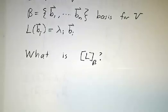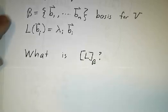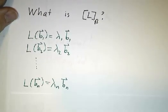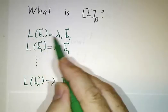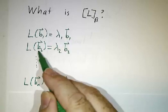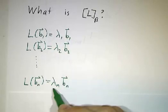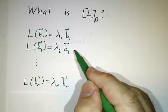Then let's try to figure out what the matrix of the linear transformation is. You have to apply L to all of the basis vectors, and you know that L of B_1 is an eigenvector, so that gives you λ_1 B_1. And L of B_2 gives you λ_2 B_2. And L of B_n gives you λ_n B_n. That's the first step towards figuring out what the matrix of the linear transformation is.